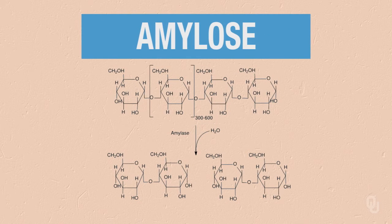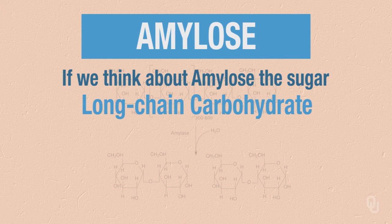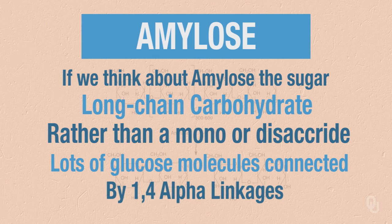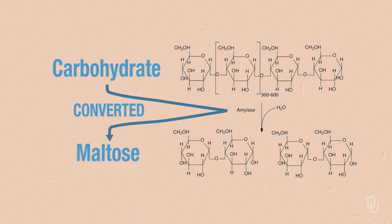As we can see here, here's amylose. If we think about amylose, it is a long-chain carbohydrate. So instead of a mono or disaccharide, we have lots of glucose molecules connected, and in amylose, by 1,4-alpha linkages. These 1,4-alpha linkages can be broken by amylase, the enzyme, into smaller carbohydrates. In malt, what we're looking for is maltose. So the amylose, the carbohydrate, is being converted with amylase, the enzyme, into maltose.